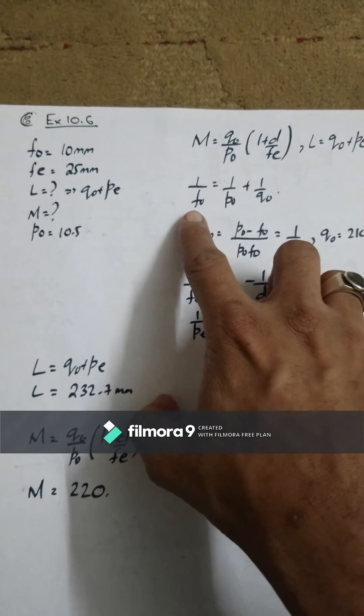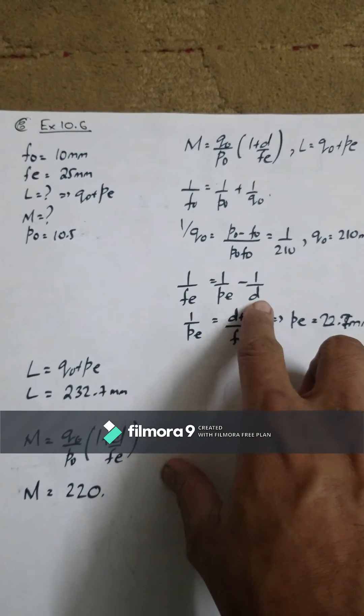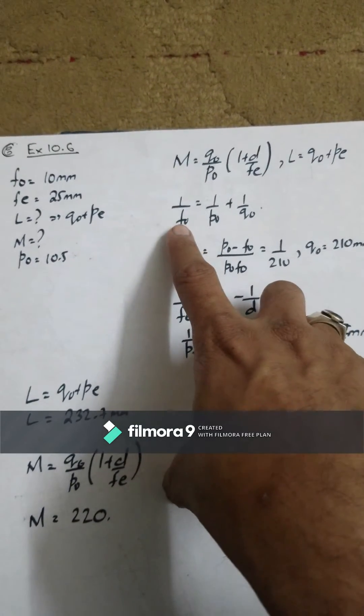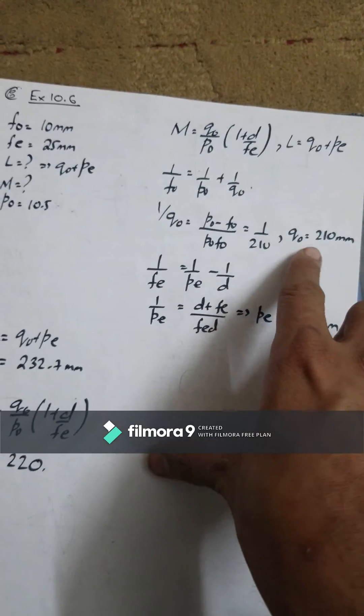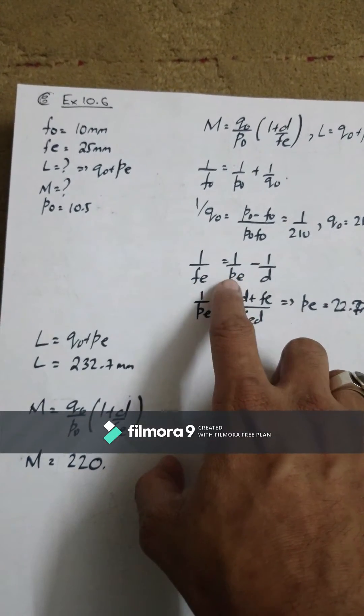First of all, we have a compound microscope and the objective and eyepiece. We will take that from the virtual image. We have to know that we will keep values. I will turn these two things given. First, I will find Q0. This kind of thing is achieved.